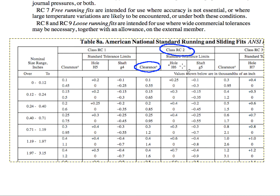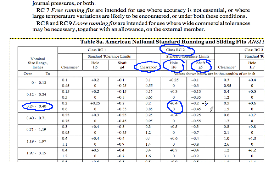Here are our clearances, hole sizes, and shaft sizes. We need to pick a nominal range, which we know is a quarter of an inch. The hole tolerance is zero plus 4 tenths. The shaft is actually less than a quarter inch — it's less by 2.5 tenths — as shown here. So the clearance range is 2 tenths to 8.5 tenths.